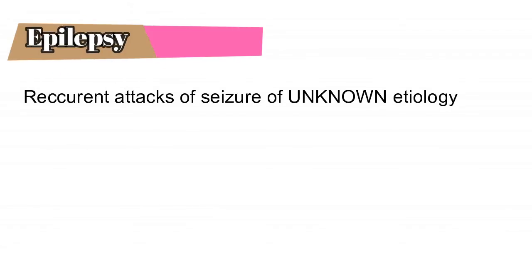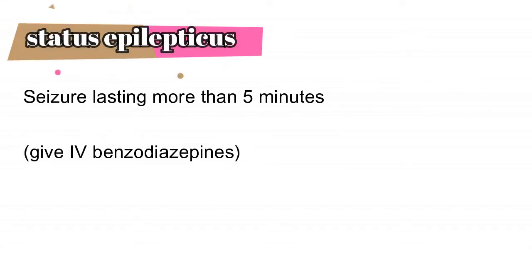Now, what is epilepsy? Epilepsy means recurrent attacks of seizures of unknown cause. So if an adult has a brain tumor and has multiple seizures weeks apart, that does not mean he has epilepsy — epilepsy has to be of unknown cause.